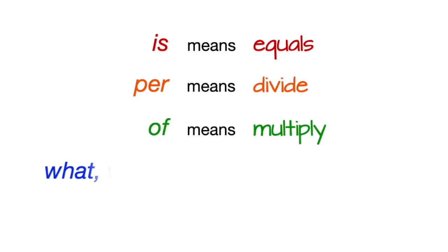So far we've seen that is means equals, per means divide, of means multiply, and what or which means put a variable there.